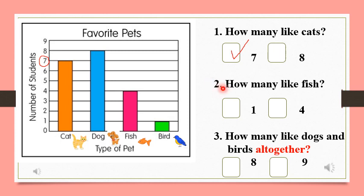Let's go to number two. How many like fish? Let's see. Here's the fish, go all the way up, now move across the line. Four students like fish.